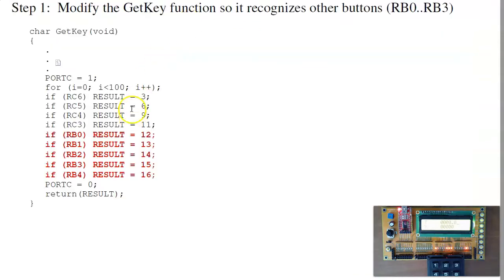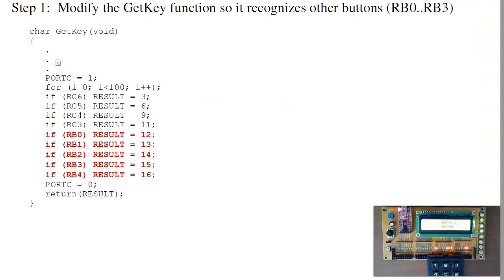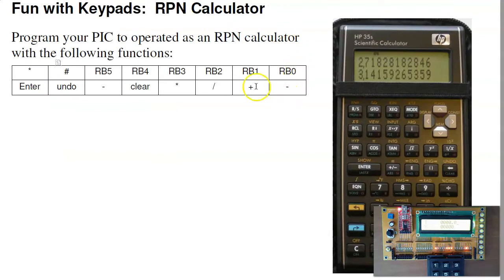What I can do is add a couple other functions, like rb0, one, two, three, four, give the scan code 12, 13, 14, 15, 16. I can now have some functions, such as if I hit rb0, I'll subtract. If I see 12, I'm going to subtract. 13 I'll add, 14 divide, 15 multiply, 16 clear.